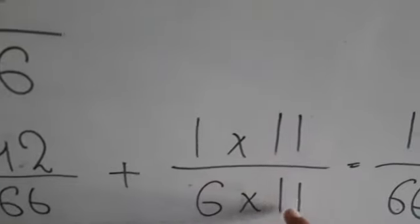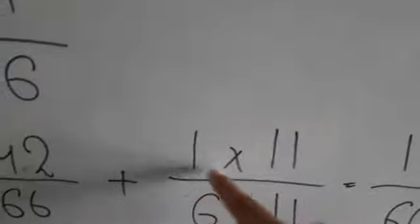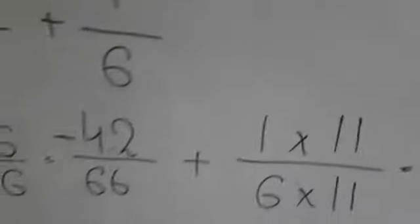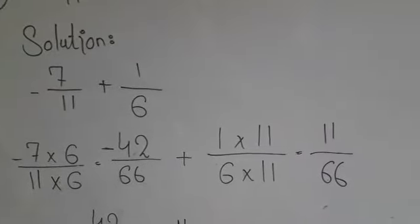Now the second part is 6. 6 multiply which number equals 66? When 6 multiply with 11, it equals 66. So 1 we will multiply with 11. 11 ones are 11. Now you can check both side denominator is equal to 66.